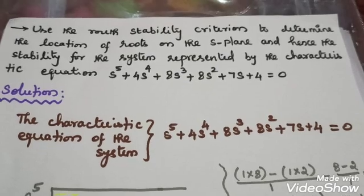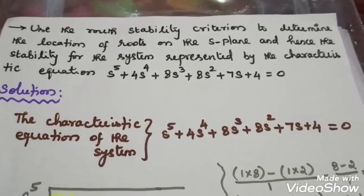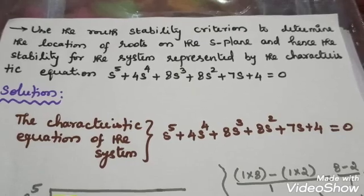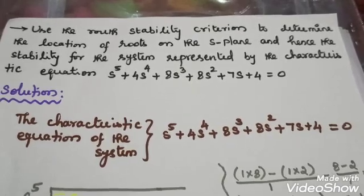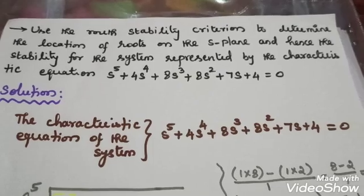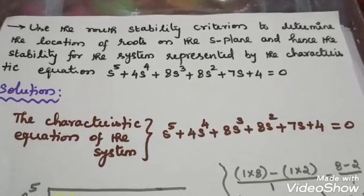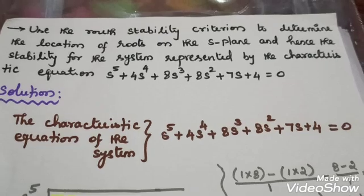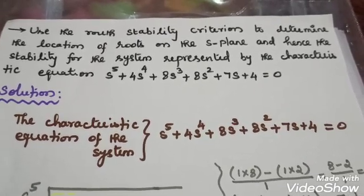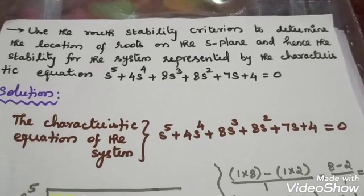How many roots are there? Now, what are the problems? The problem is S⁵ — the highest power of S. The total number of roots: how many roots are there? 5 roots. The number of roots is equal to the highest power of S.